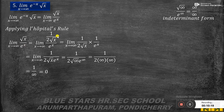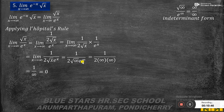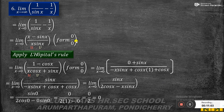Rewriting, we have limit x tends to infinity of 1 by (2√x · e^x). Substituting x equal to infinity: 2 times √∞ times e^∞ is infinity, so we get 1 by infinity, which equals 0. Therefore, limit x tends to infinity of e^(−x)·√x equals 0.